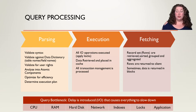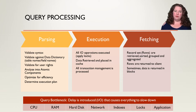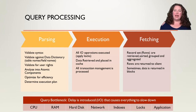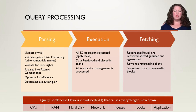Once we determine our execution plan, we go to execution: all IO operations are run, data is retrieved and pulled into cache, and all transaction management is processed. Finally, in the fetching stage, we determine what the user actually wants — the select statement, sorting, group by, and aggregates all happen last. The execution stage handles the from and where clauses, while fetching determines which fields come out, how it's sorted, grouped, and aggregated.